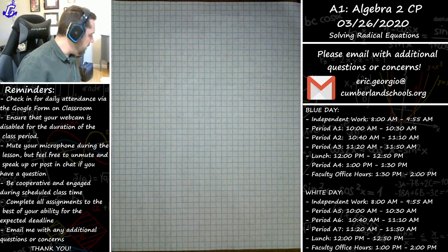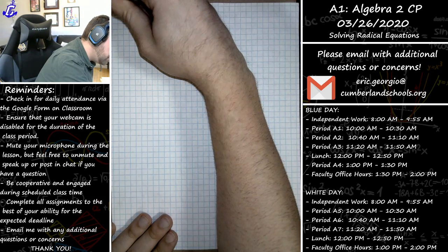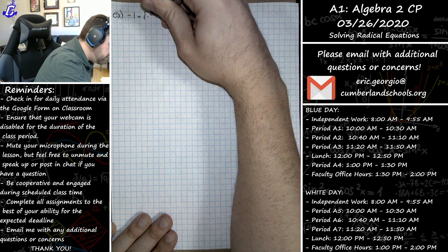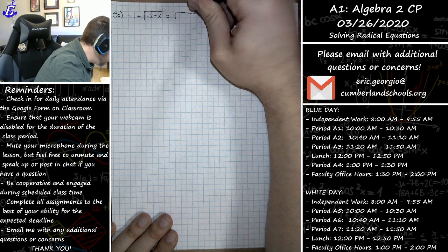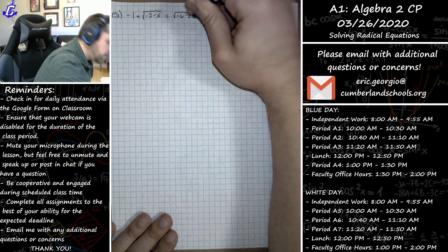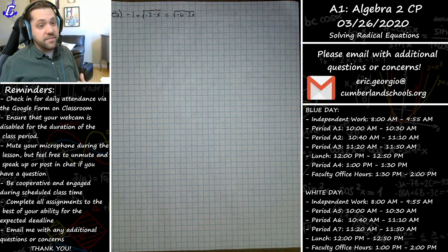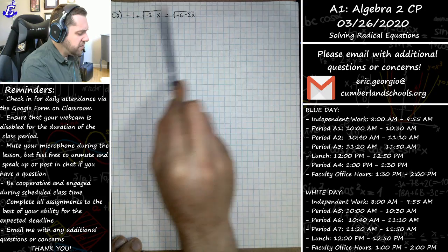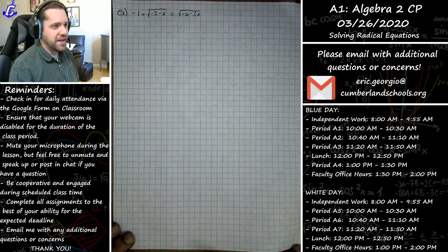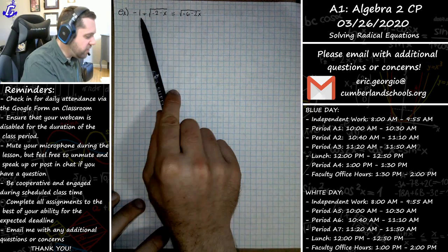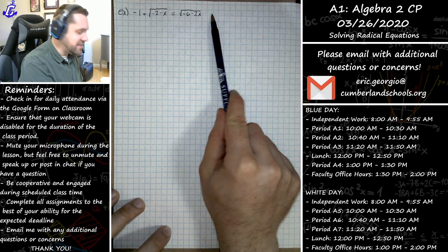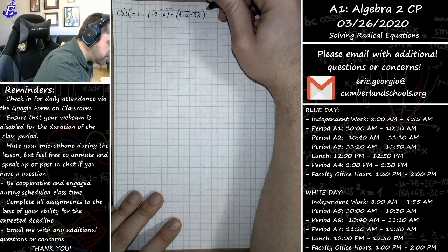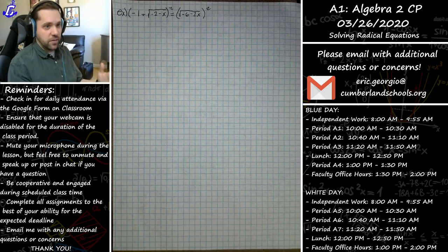Here is the problem I'd like to do with you. We have negative 1 plus the square root of negative 2 minus x is equal to the square root of negative 6 minus 2x. Same deal as before — because we have this constant over here, we have two radicals and a constant term. It's not possible to isolate both radicals at the same time. We just have to square both sides to eliminate one of the radicals, combine down to a single radical problem, then square both sides again.